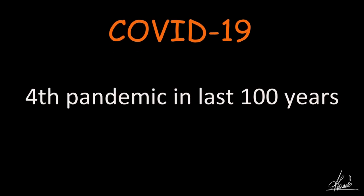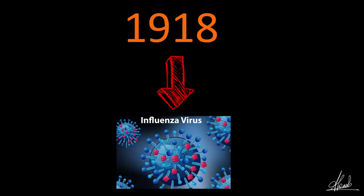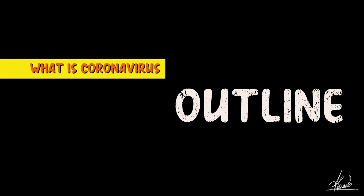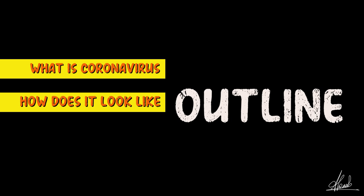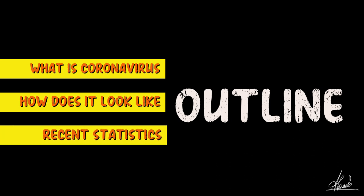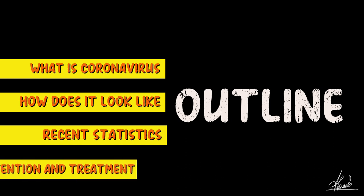COVID-19 is the fourth pandemic in the last 100 years. Before this, the pandemic that had occurred was in 1918 — the influenza pandemic. In this video, we are going to divide it into different segments where we'll talk about the basics of coronaviruses, how the virus actually looks, and also the epidemiology and recent statistics on the pandemic. Lastly, we're going to see what the treatment and preventive measures for the disease are.